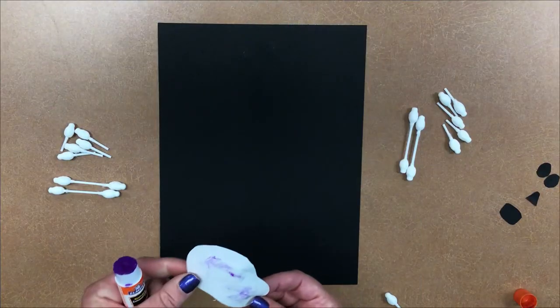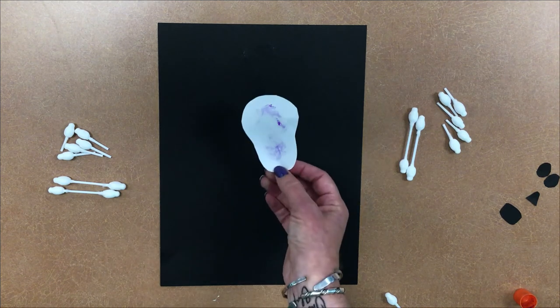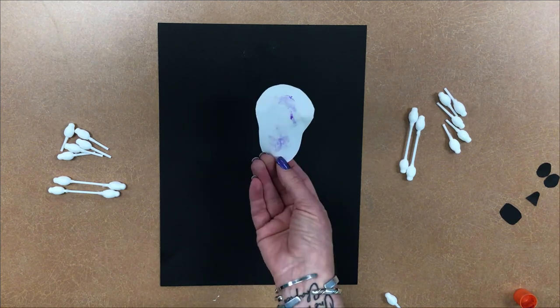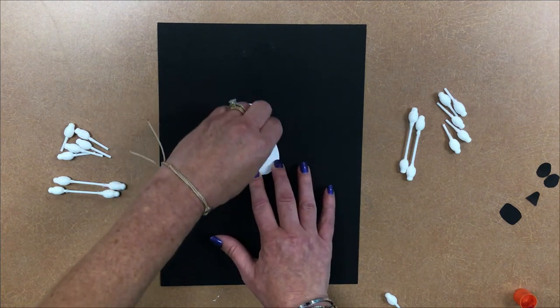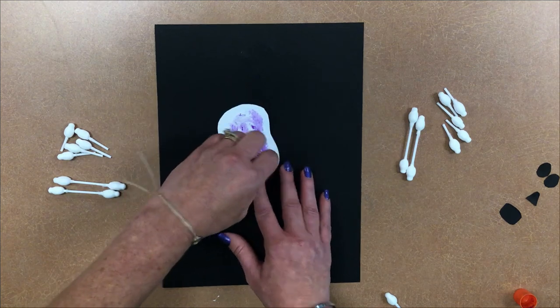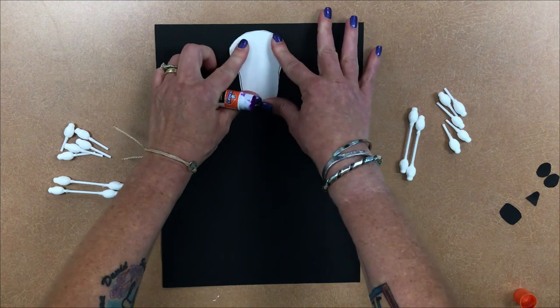So let's get started! The first step to making our friendly skeleton is using a white piece of paper cut out a shape, kind of like a pear shape. And then for this project you could use a glue stick or Elmer's glue, whatever you have handy. So glue the skeleton head on.